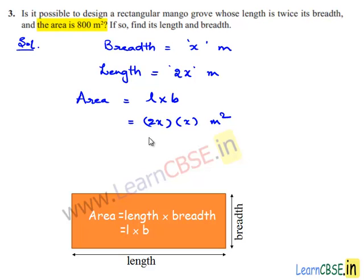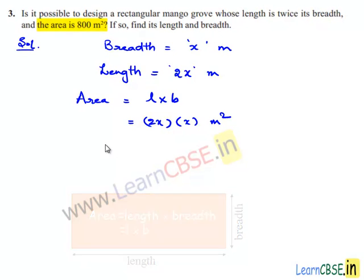According to the given question, area is given as 800 meter square. So 2x times x is equal to 800. This is 2x² and this is 800.